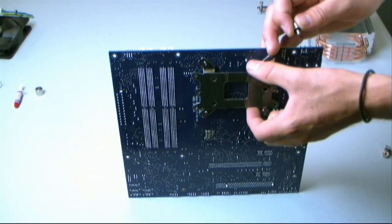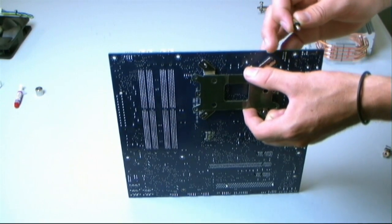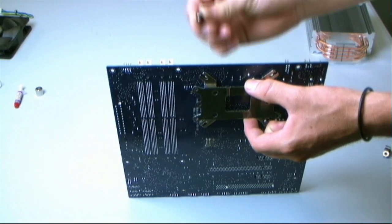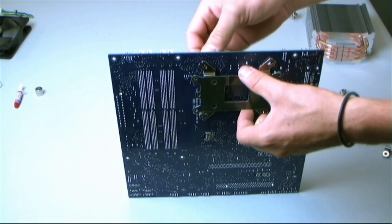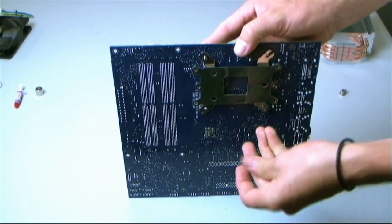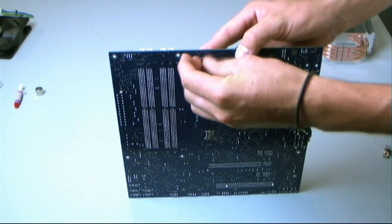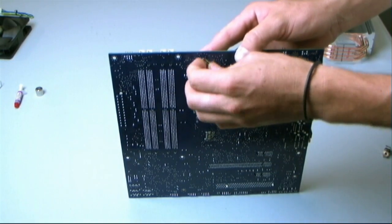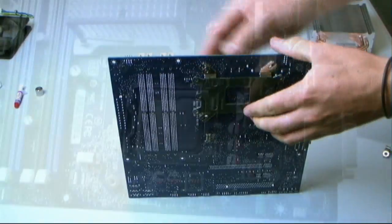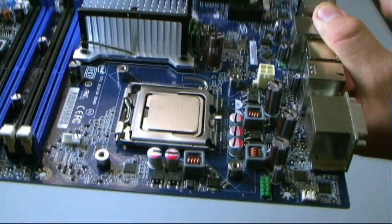Now what you will need to do is mount the back plate on the back side of the motherboard. Use the standoff, slide it through, use the nut. Just make sure it's secured tightly. Like so. Now we have the back plate mounted on there.